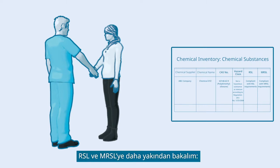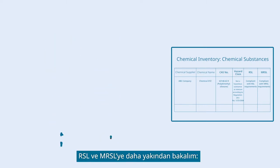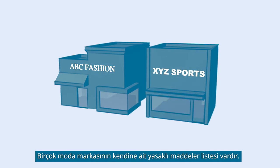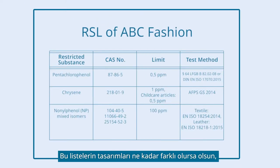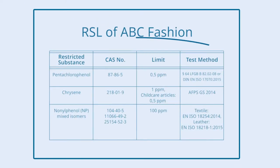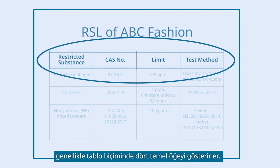Let's take a closer look at the RSL and MRSL. Many fashion brands have their own restricted substance list. No matter how different the design of these lists is, they usually show four key items in a table format.